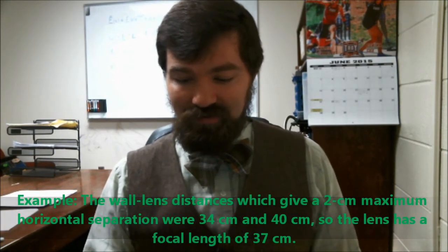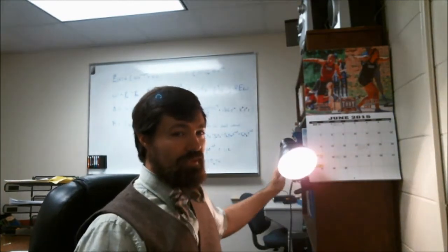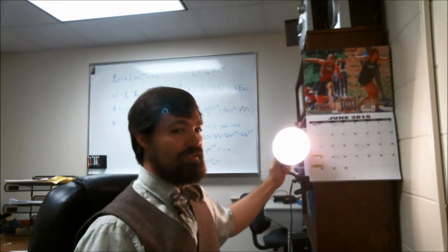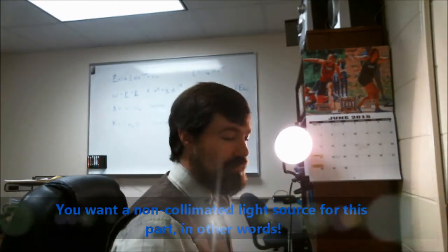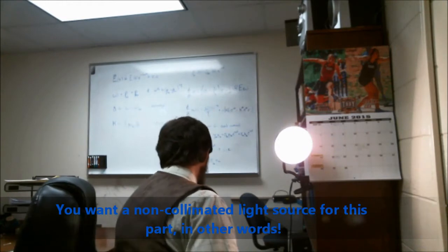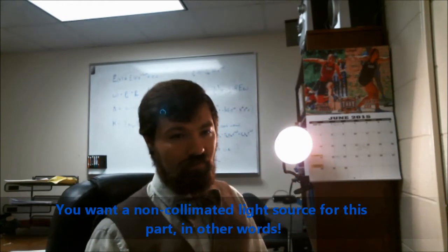Third method is the one that's going to take a bit more time. For this one, you get rid of the sun. Well, you stop using it as your light source, I mean. And instead you use some other non-collimated light source. For example, this very hot incandescent lamp would work. Or you could use a candle or a lighter or what have you.